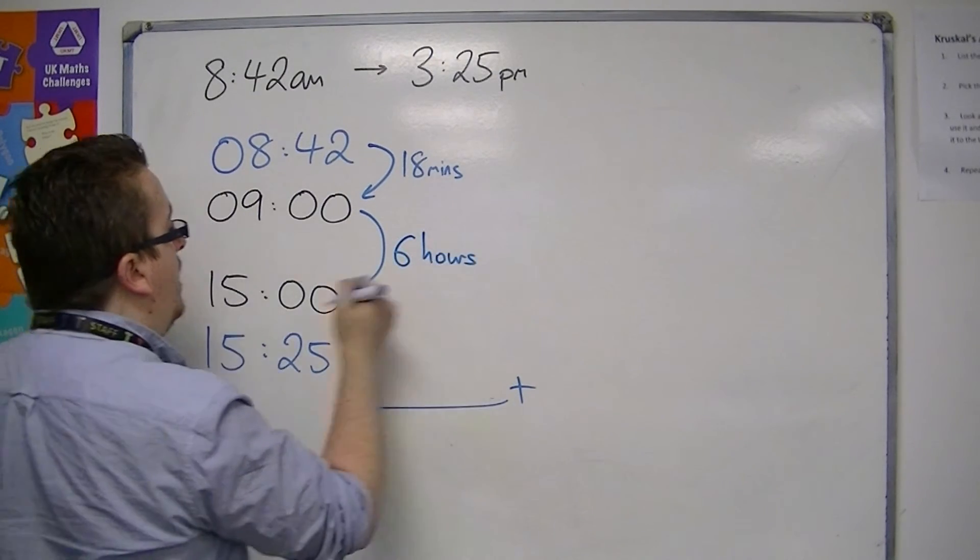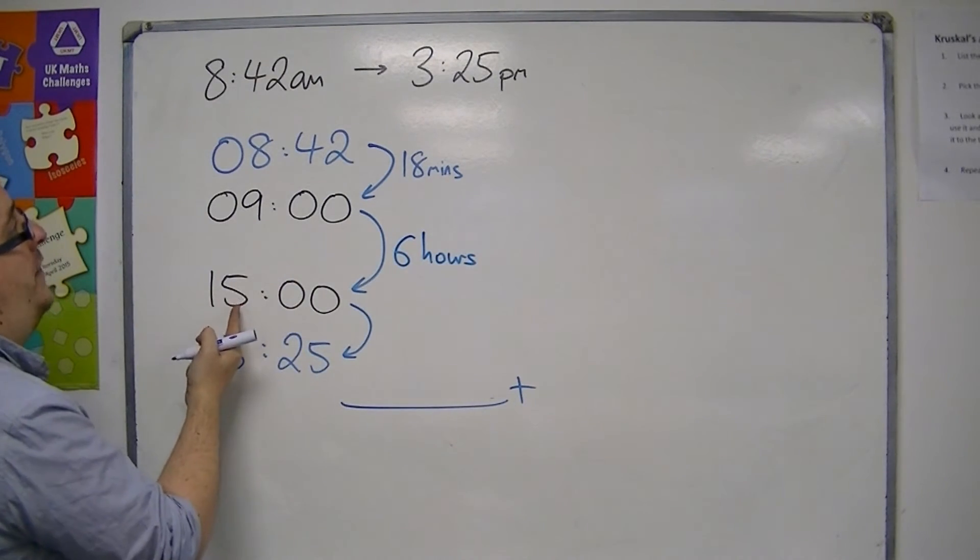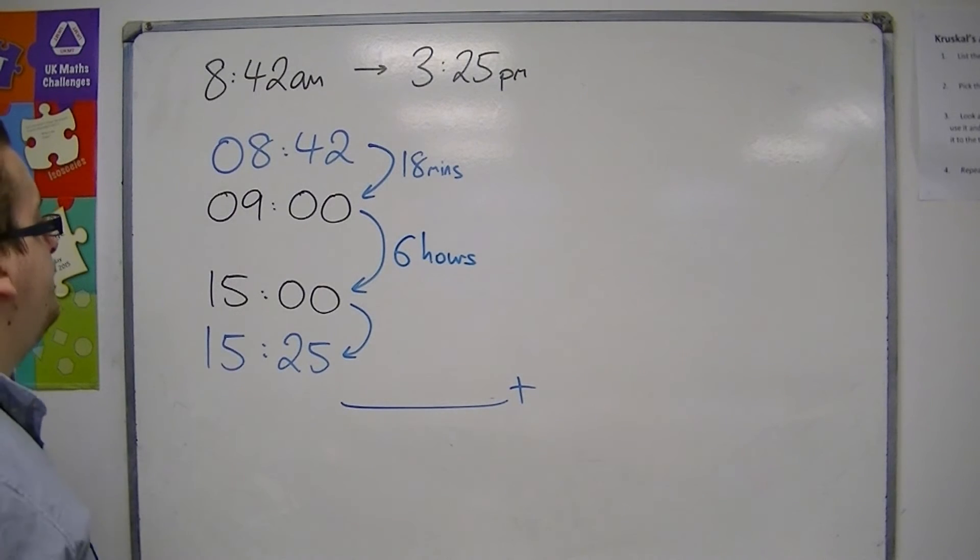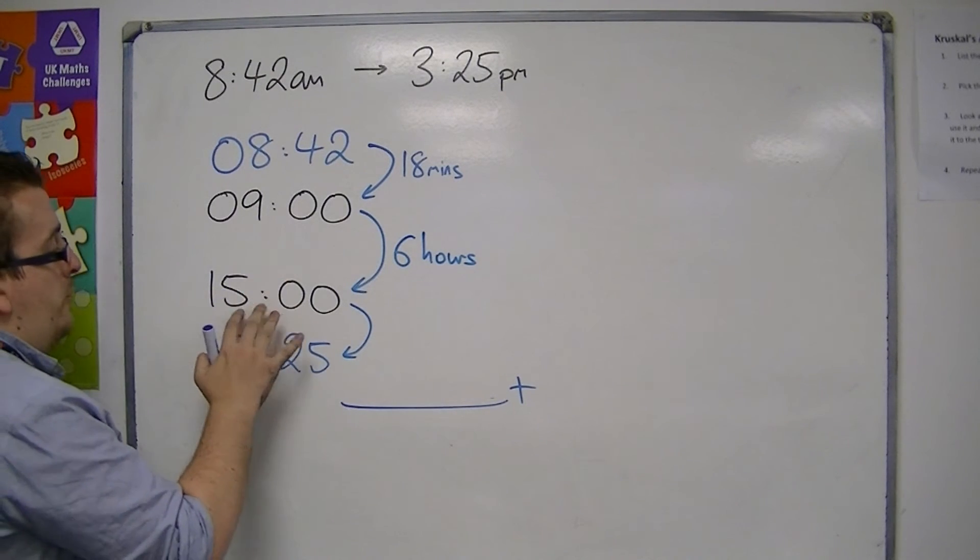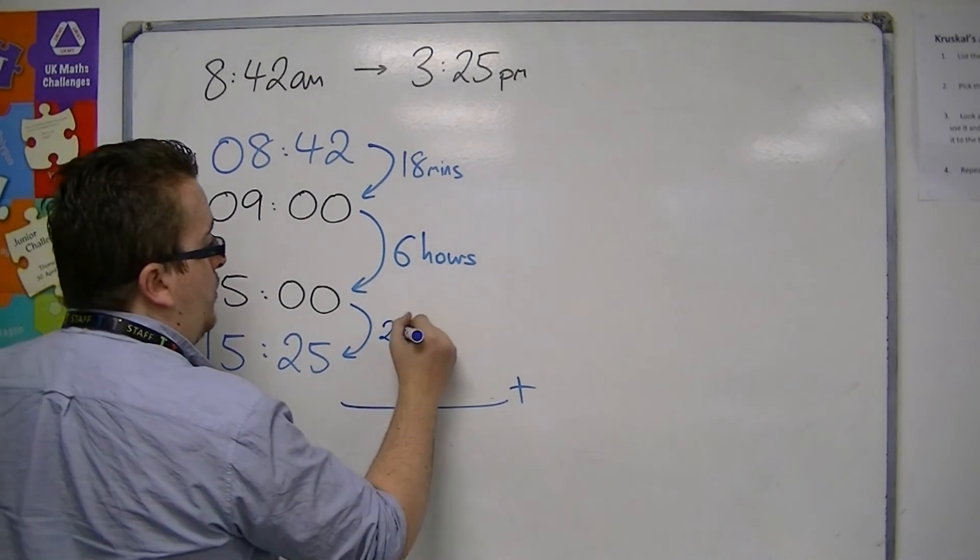You can see that it's much easier to determine how many hours there are in this case when you're in 24-hour clock. And then from 3 o'clock to 3:25, there are 25 minutes.